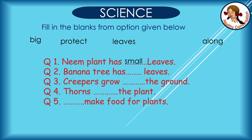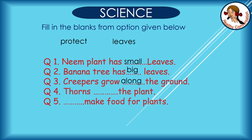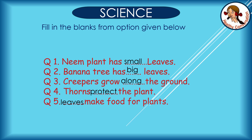Answers: Neem plant has small leaves. Banana plant has big leaves. Creepers grow along the ground. Thorns protect the plant. Leaves make food for plants.